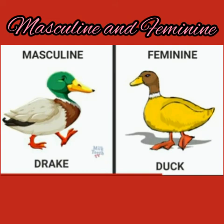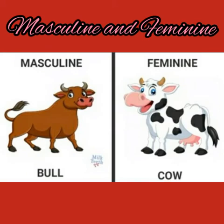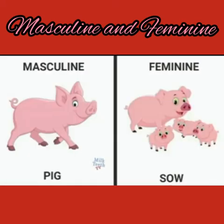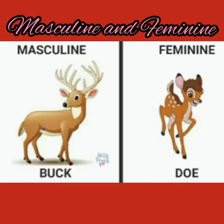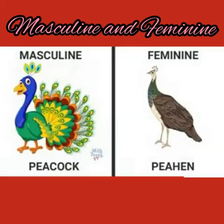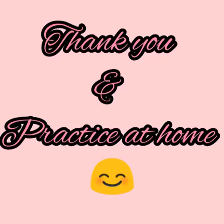Drake and duck — drake is masculine, duck is feminine. Bull and cow — bull is masculine, cow is feminine. Pig and sow — pig is masculine, sow is feminine. Rooster and hen. Buck and doe. Peacock and peahen — peacock's feminine gender is peahen.